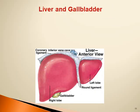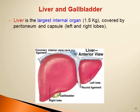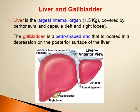Now let's talk about the liver and the gallbladder. The liver is the largest internal organ — the largest organ in the body is the skin, but the largest internal organ is the liver. It has a mass of 1.5 kilograms, is covered by peritoneum, has a capsule and two lobes — a larger right lobe and a smaller left lobe. The gallbladder is a pear-shaped sac located in a depression on the posterior surface of the liver.